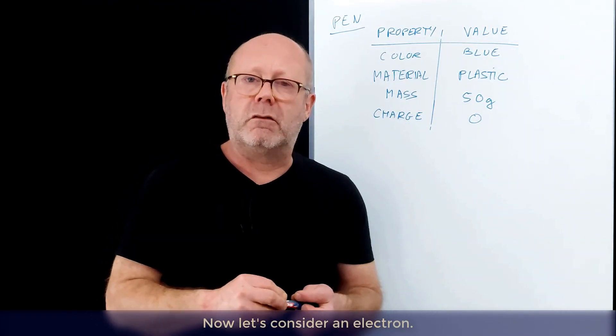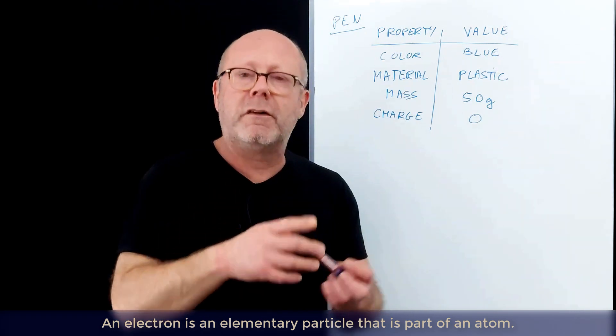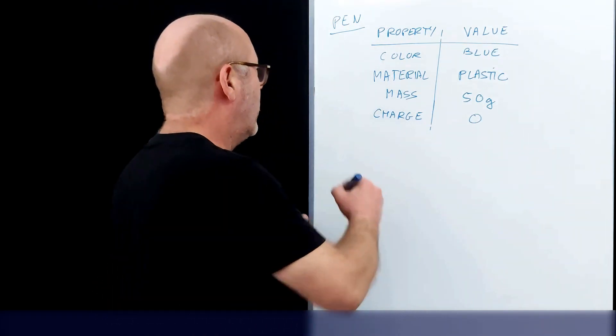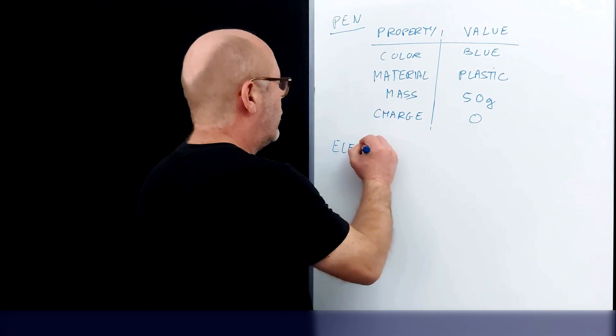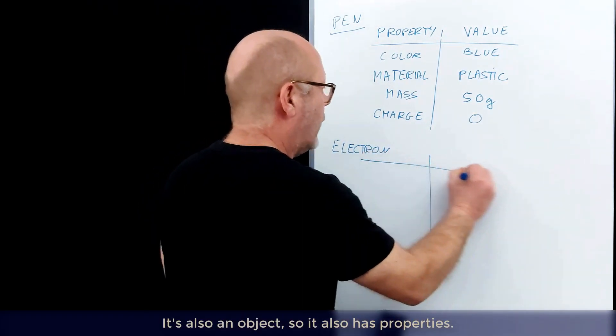Now let's consider an electron. An electron is an elementary particle which is part of an atom. An electron is also an object, so it also has properties and values associated with it.